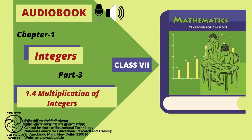Try these: 1. Starting from minus 5 multiplied by minus 4, find minus 5 multiplied by minus 6. 2. Starting from minus 6 multiplied by 3, find minus 6 multiplied by minus 7. Try these: Find minus 31 multiplied by minus 100, minus 25 multiplied by minus 72, minus 83 multiplied by minus 28.